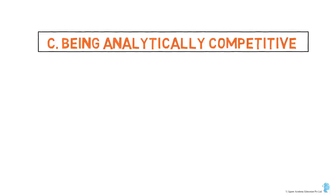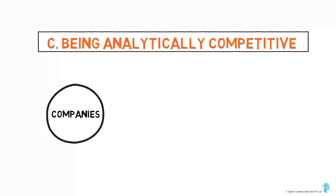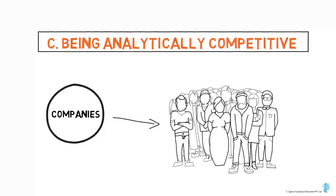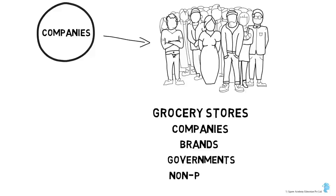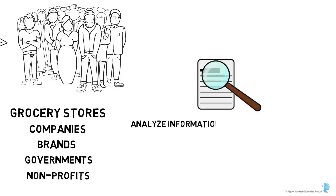Being analytically competitive: most companies today have access to massive amounts of information and data about their consumers, but there are only a few who actually make use of it. Grocery stores, companies, brands, governments, and non-profits all collect and store a lot of data, but they still don't know how to use it effectively — they make critical business decisions that affect us all as citizens or consumers, yet they don't analyze the information to make better decisions. But the change is starting.